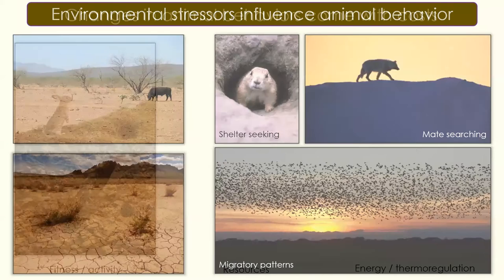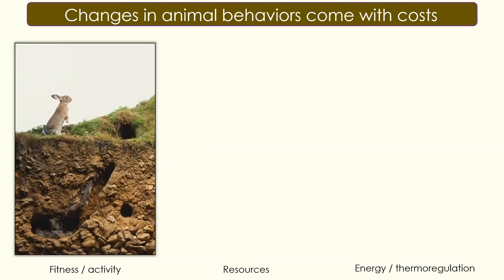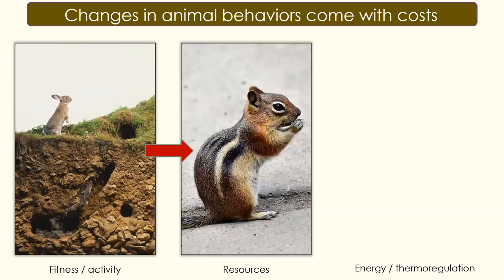Changes to animal behaviors come with costs. For example, changes to activity in response to a stressor might incur fitness costs where an animal might change their mating behavior, foraging behavior, or defending territory. Changes to activity might therefore incur resource costs where the acquisition of resources might be affected and become reduced.